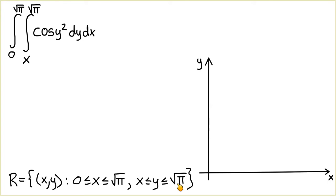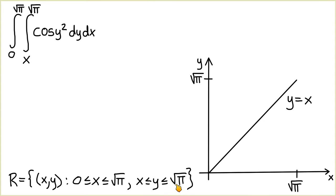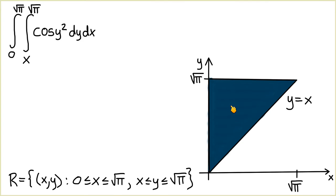Let's sketch this region of integration. Notice that in the second inequality the value of y ranges from the line y = x to the line y = √π for values of x ranging from 0 to √π. Since the values of y are bounded between the lines y = x and y = √π, the region of integration is this shaded region.